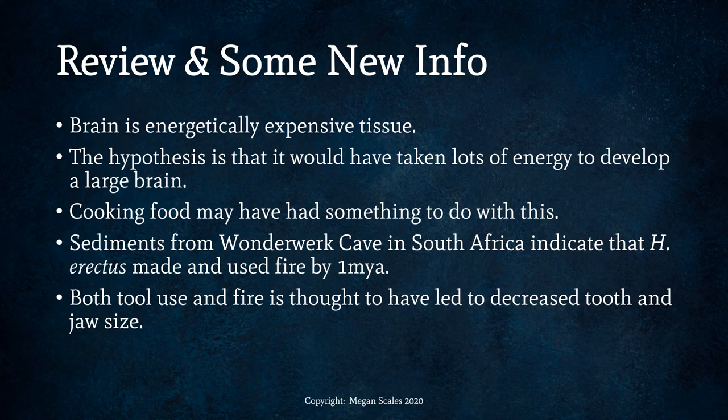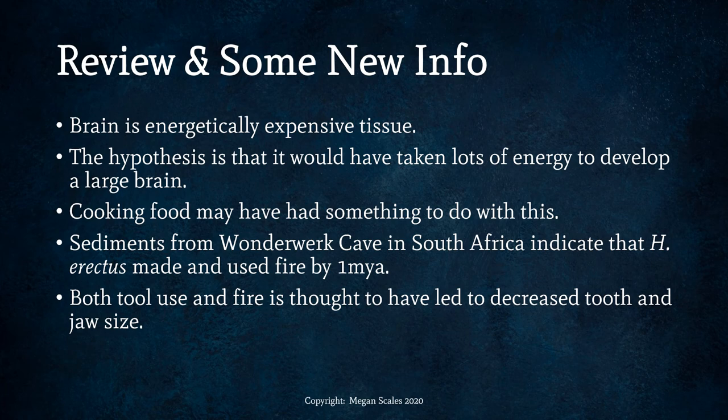The brain is energetically expensive tissue. One hypothesis states that it would have taken lots of energy to develop a large brain, and cooking food may have had something to do with this. Sediments from Wonderwork Cave in South Africa indicate that Homo erectus made and used fire by one million years ago. Both tool use and fire are thought to have led to decreased tooth and jaw size. Cooking food breaks it down so you can get more energy — more calories, more nutrients — and makes it easier to digest, potentially opening up new evolutionary pathways and nutritional sources.